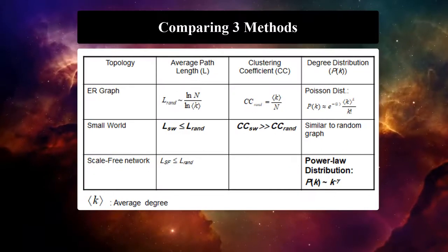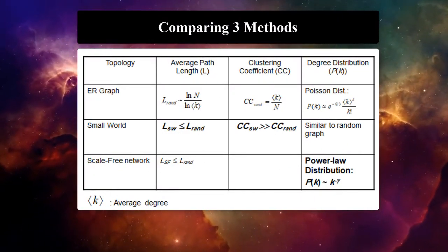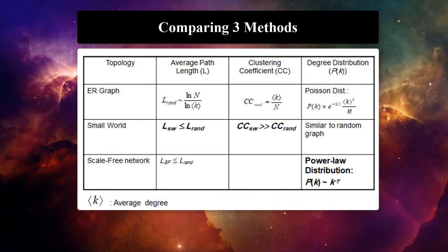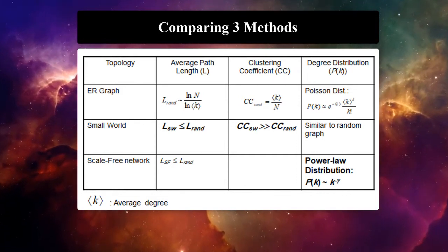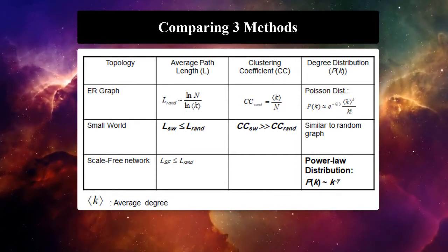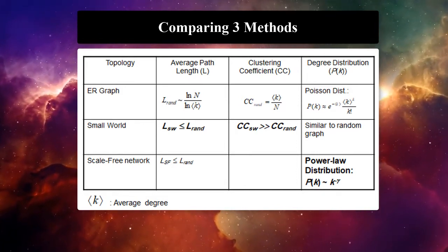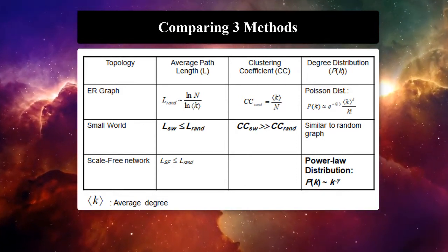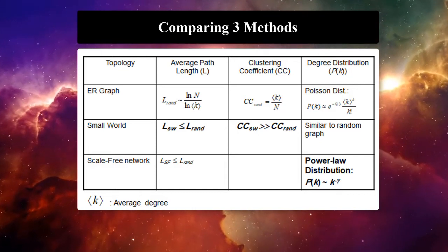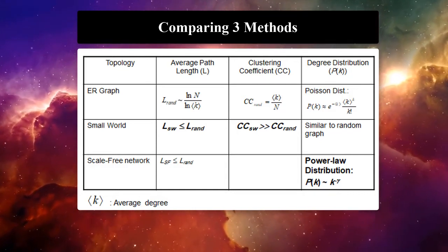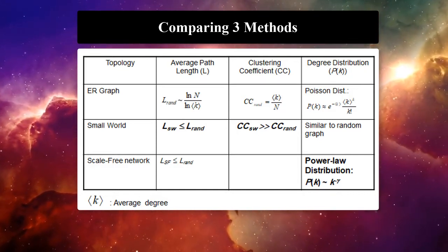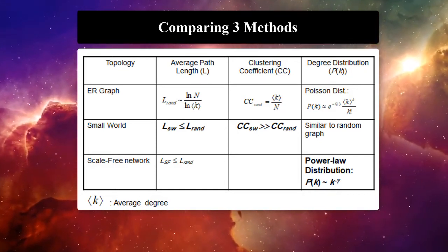In this section, we learned about three network models that generate different types of networks. We learned about their properties, and this table gives an overview of their topological differences.